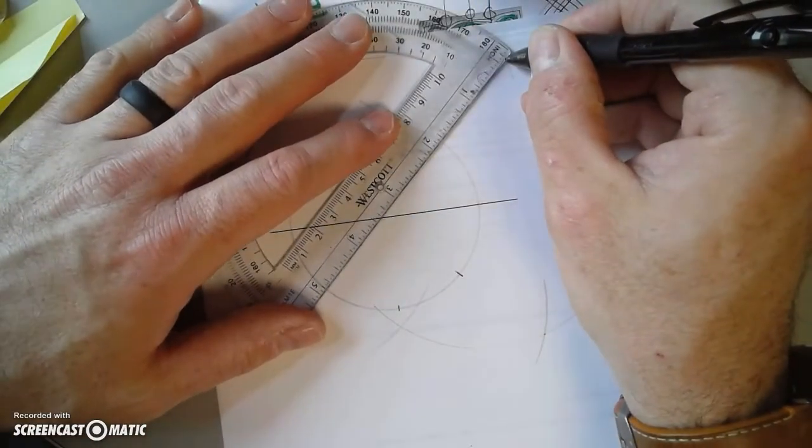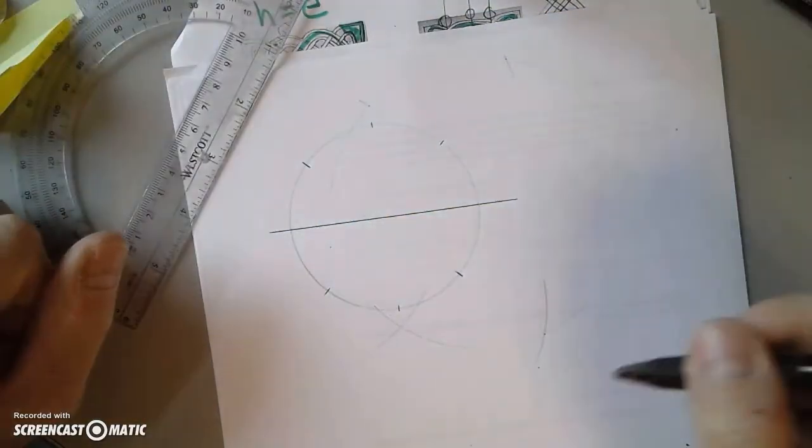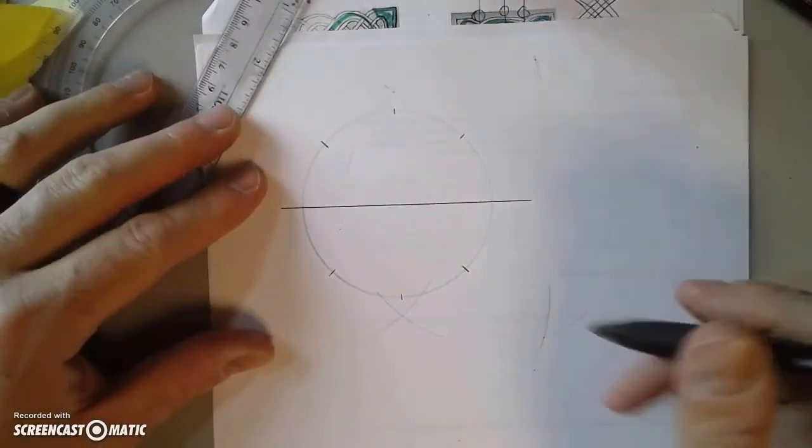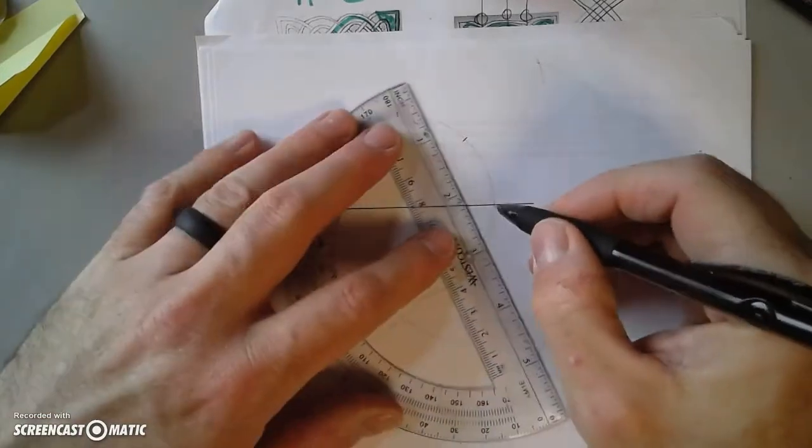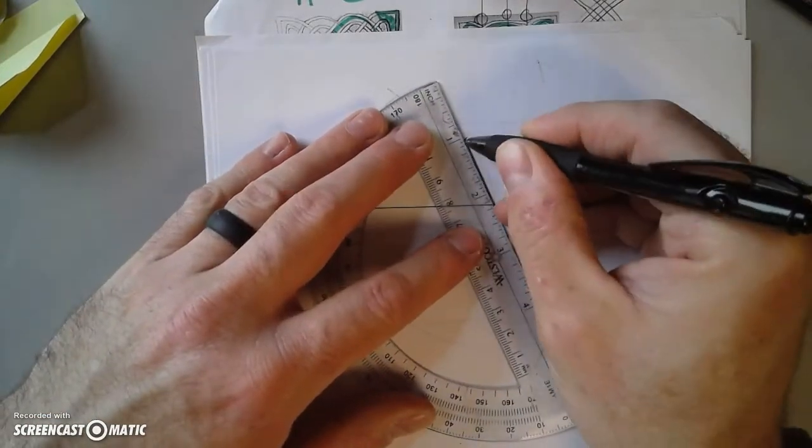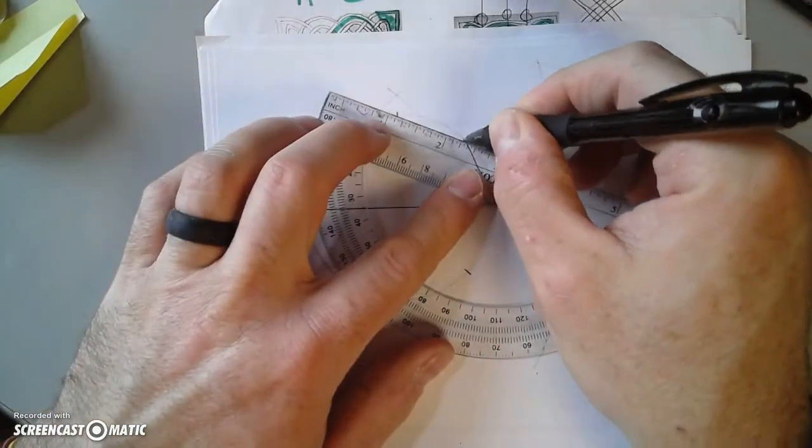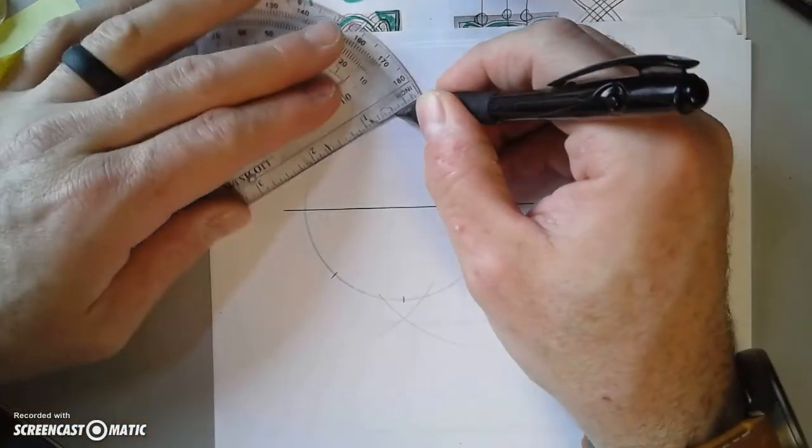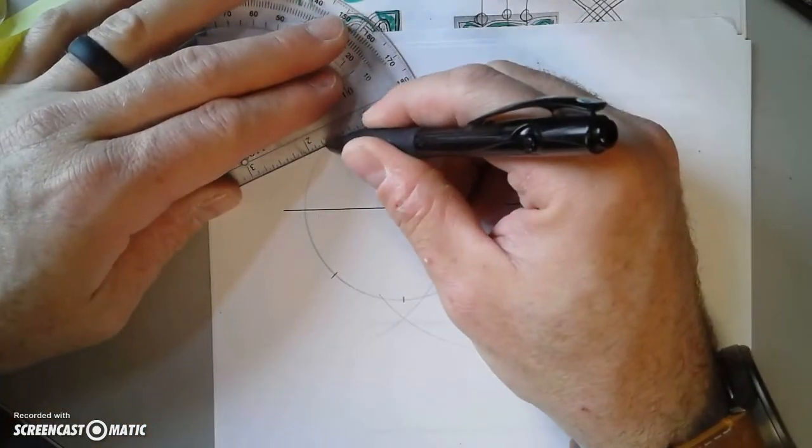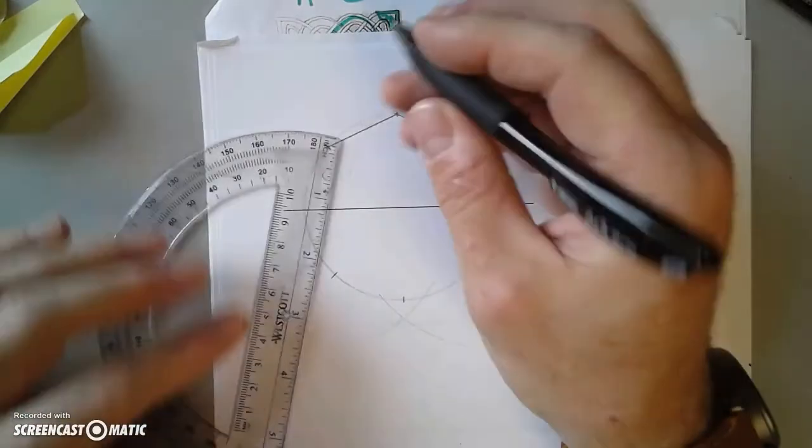And I can use the center of the circle as one of them. So that subdivides again. These markings are markings you would leave so that they show your work. Now I have an octagon.